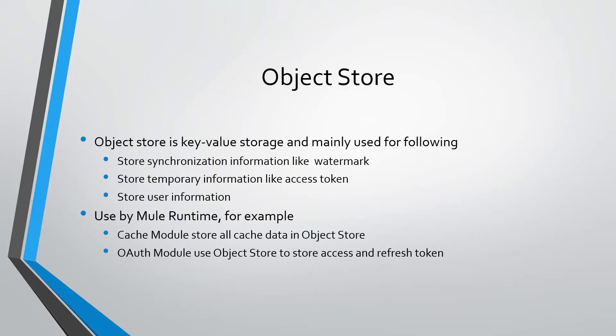Object store is a key-value storage in Mule application. We can store key-value pairs in object store and at a later point in time we can retrieve that information and use it in our application logic. We can store information like watermark, access token, and user information.